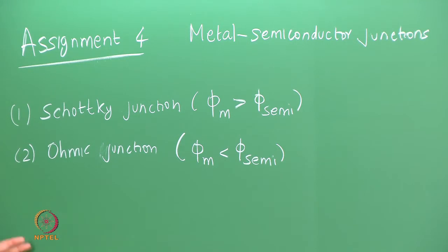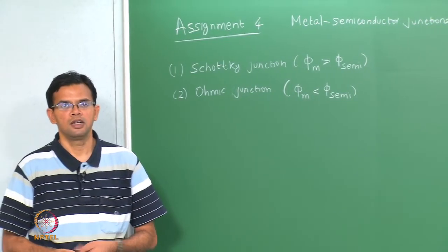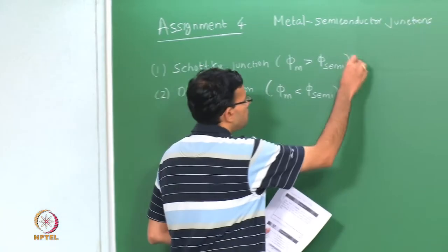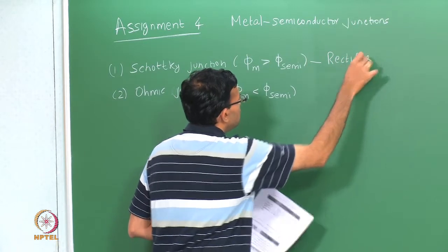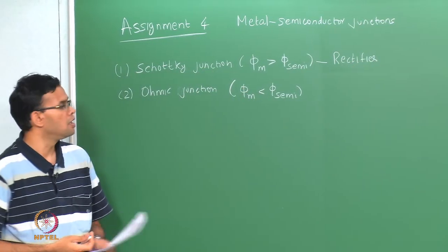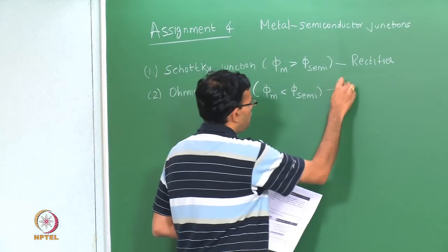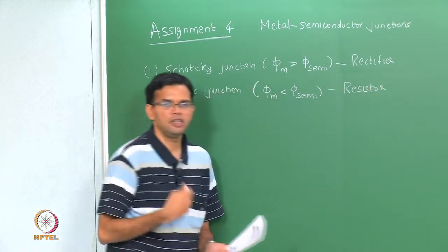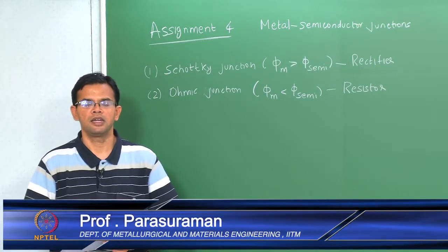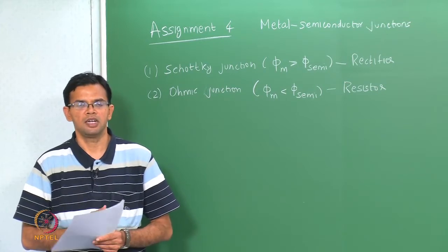A Schottky junction essentially behaves like a rectifier — it conducts current in the forward bias and does not have any conduction in the reverse bias. In this way, a Schottky junction is similar to a p-n junction, which is also a rectifier. An ohmic junction, on the other hand, is just a pure resistor; it conducts both in the forward and the reverse bias, and the conductivity is defined by the resistivity of the semiconductor material.